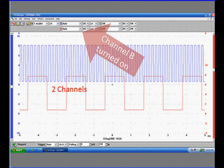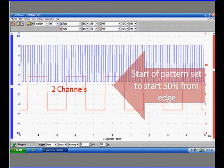We have a second channel turned on. We have a fast and a slow. Channel B is now turned on, and it's automatic. The start of the pattern is set for 50% from the edge. So you can see we can make dramatic changes in the pattern of where it starts.